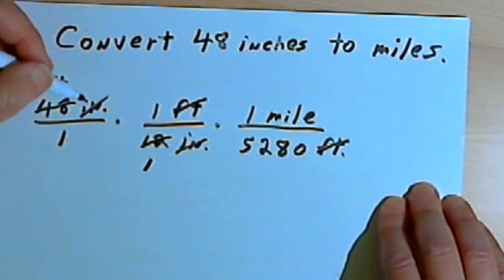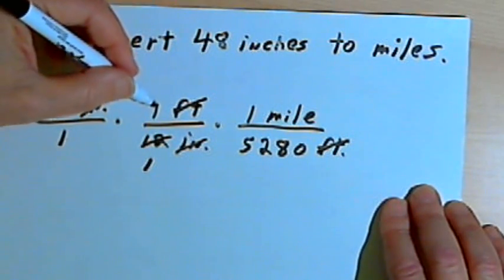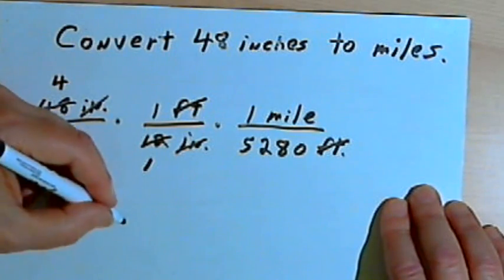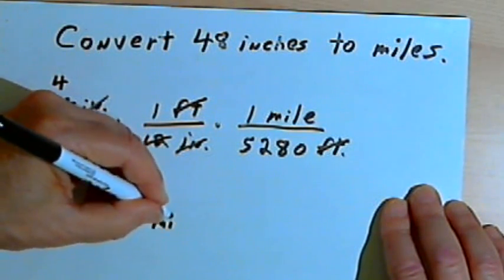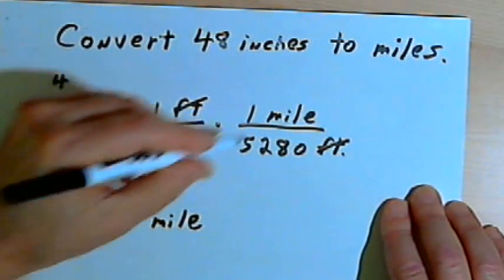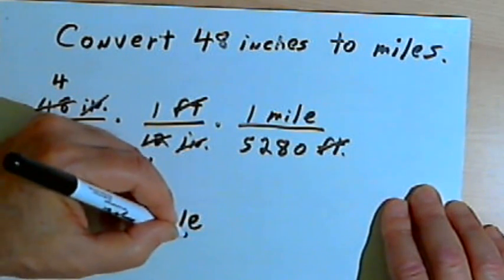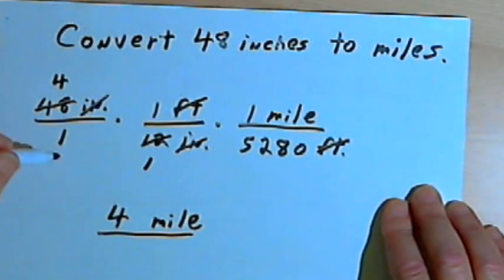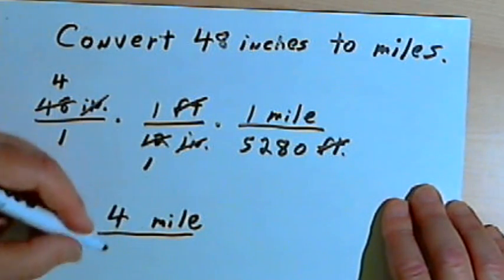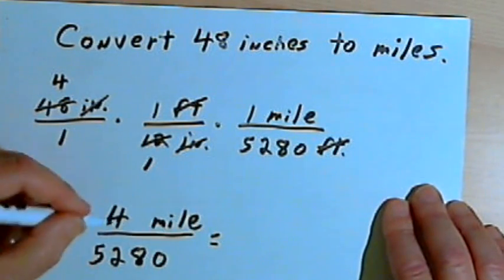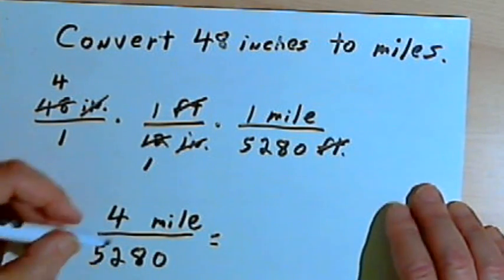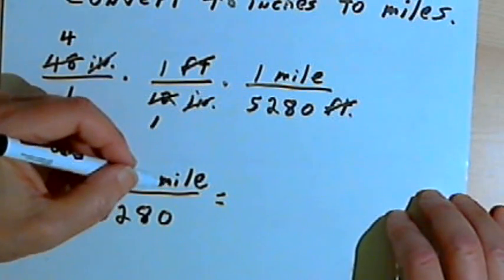And now when I multiply this, I get 4 times 1 times 1 mile. Let's put that down here. So I've got 4, mile is the unit of measure I have left, and that's going to be divided by 1 times 1 times 5,280. So I've got 4 over 5,280 with this mile as my unit of measure.